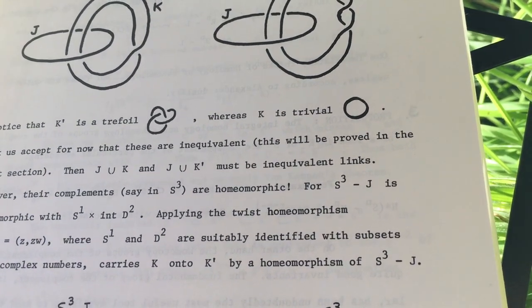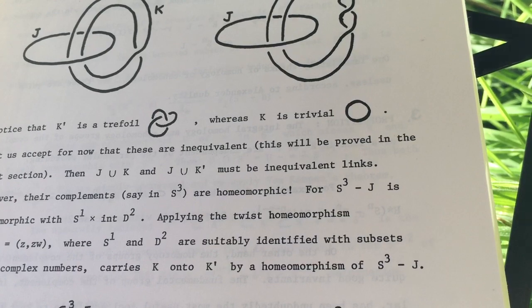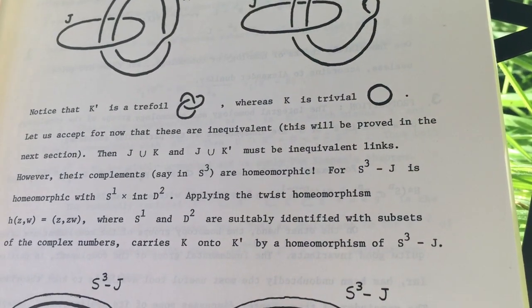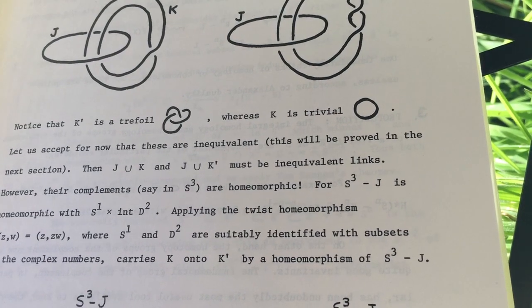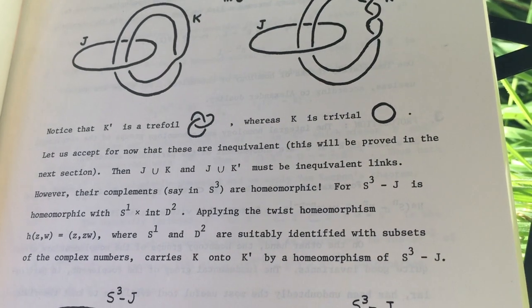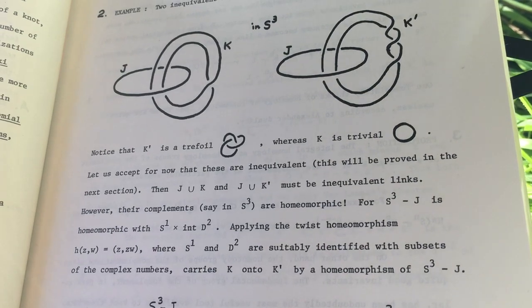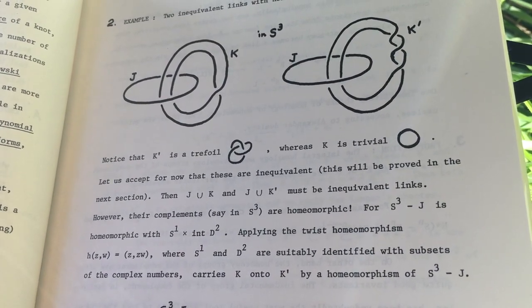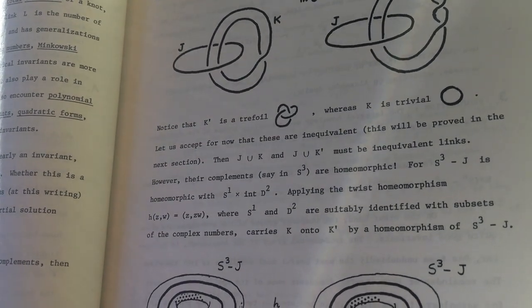However, their complements — does S³ just mean like three-dimensional space? Their complements are homeomorphic. Space minus J is homeomorphic, applying a twist homeomorphism H where S and D are suitably identified with subsets of the complex numbers, carrying K onto K prime by a homeomorphism of S³ minus J. It follows that S³ minus J union K and S³ minus J union K prime are homeomorphic.